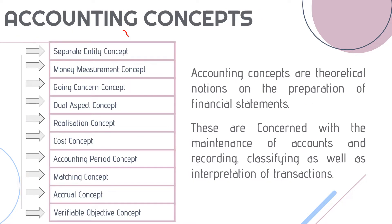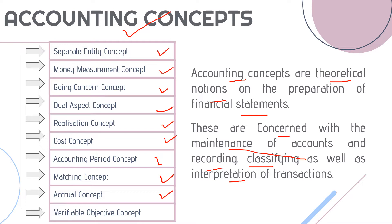Let's start with accounting concepts. Accounting concepts are concerned with maintenance of accounts, recording, classifying and interpretation of transactions. We have 10 accounting concepts: separate entity, money measurement, going concern, dual aspect, realization, cost concept, accounting period concept, matching concept, accrual concept, and verifiable objective concept.